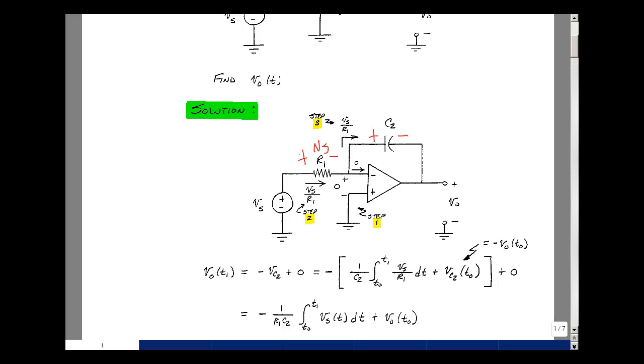And we can use our definition of capacitor voltage from our chapter 6 notes. Let's solve for V out. The rise in voltage is V out. The drop is minus the capacitor voltage plus zero. And that's my equation right here.